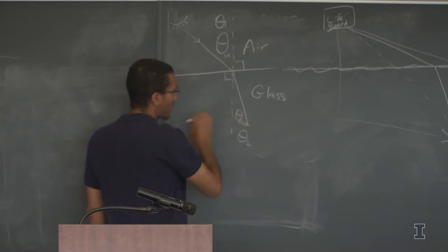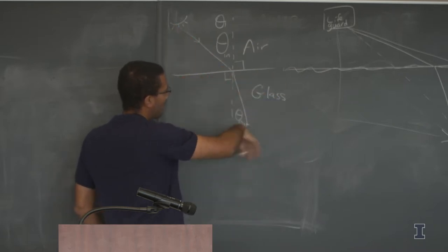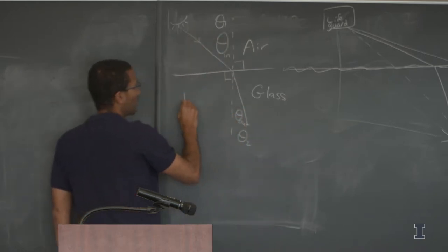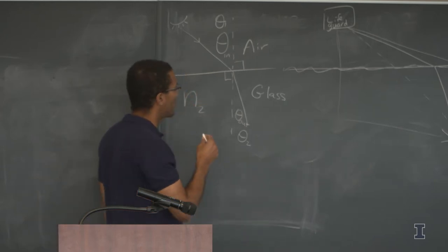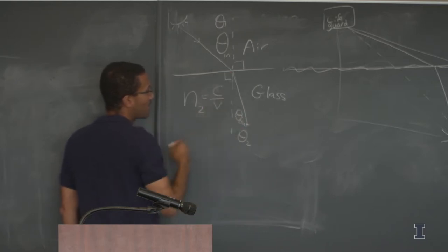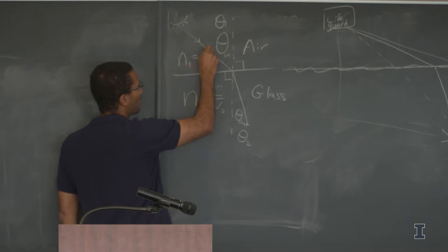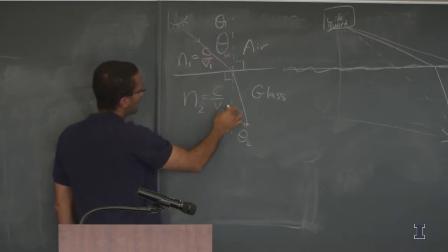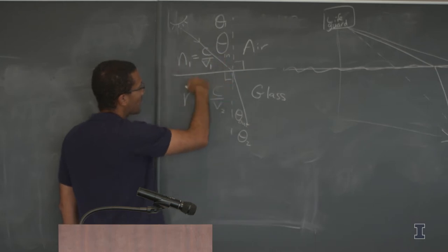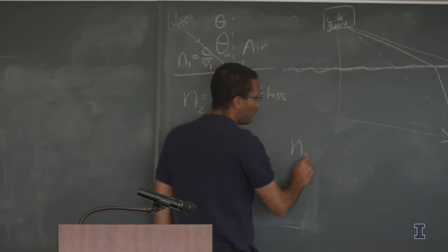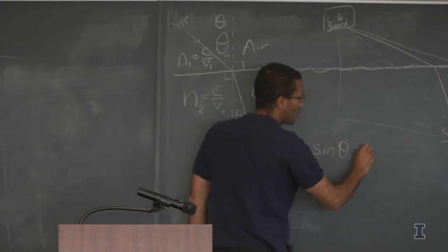We're going to shine light at a block of glass mounted on a protractor and measure the output angle as a function of the incoming angle. The refractive index n is the ratio of the speed of light in vacuum compared to the velocity in that material. Snell's Law states: n1 times the sine of theta one equals n2 times the sine of theta two.